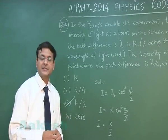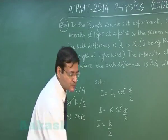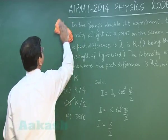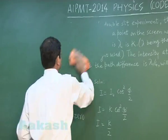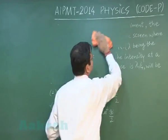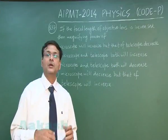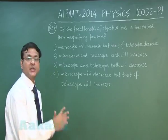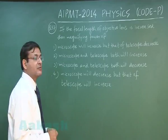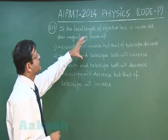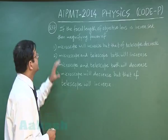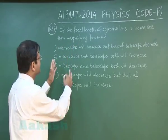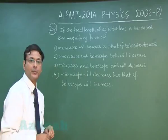Now let me explain question 37, which is directly a formula-based question. If the focal length of the objective lens is increased, you have to compare the magnifying power of a microscope and a telescope.